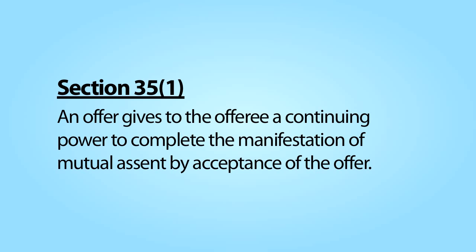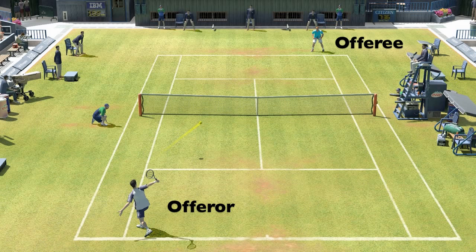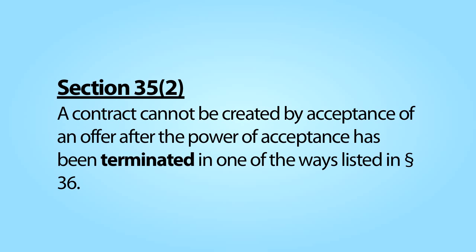As we've noted, section 35 of the restatement tells us that after an offer has been made, the power shifts to the offeree to accept the offer and thereby create a contract. To return to our tennis analogy, once the offeror makes an offer, the proverbial ball is now in the offeree's court to accept or reject that offer. Assuming there has not been an effective termination of the offer, the offeree now has the sole power to decide whether a contract is created. But subsection 2 of section 35 tells us that the offeree loses the power to accept the offer if the offer is terminated in one of the ways listed in section 36.